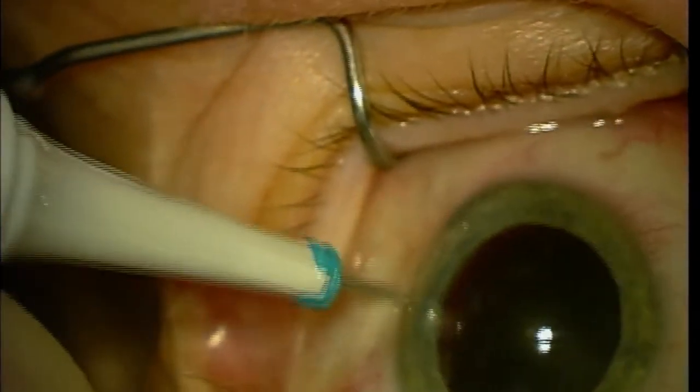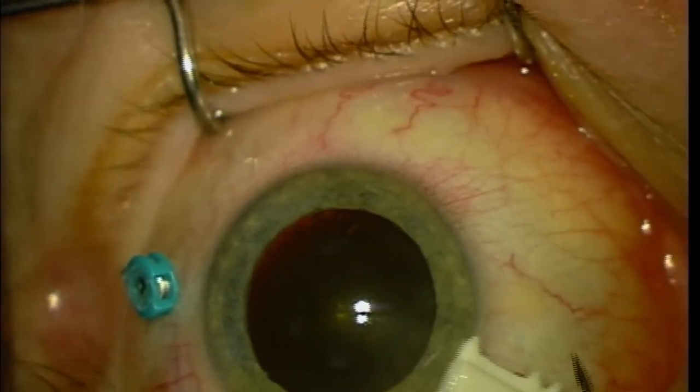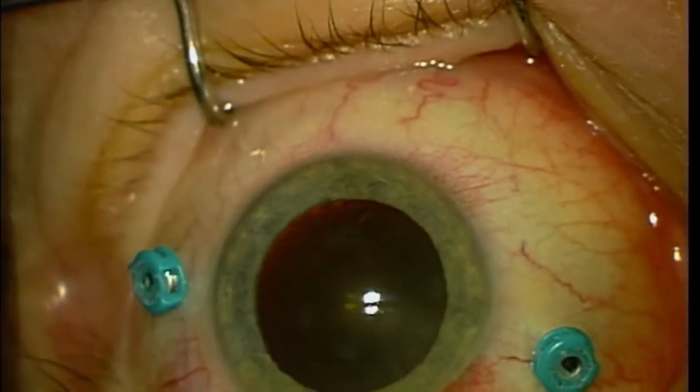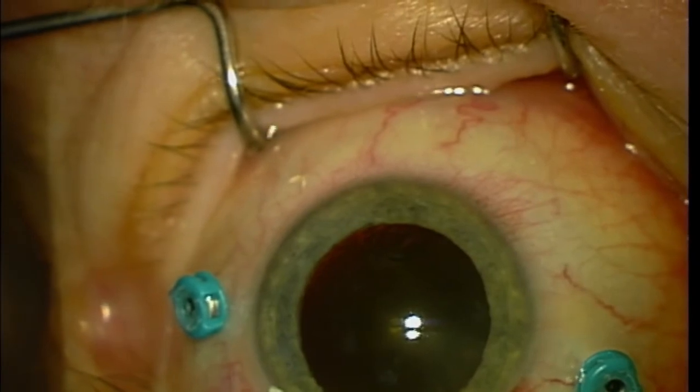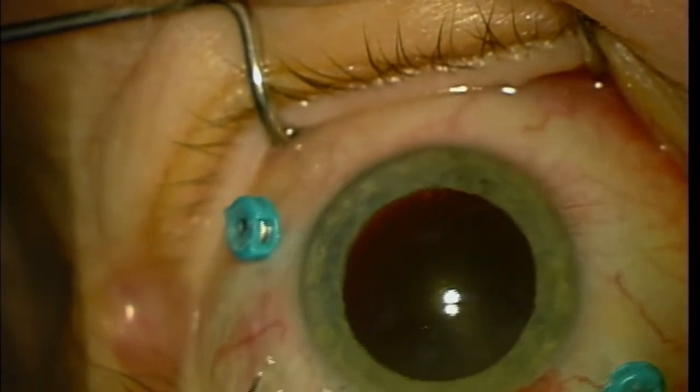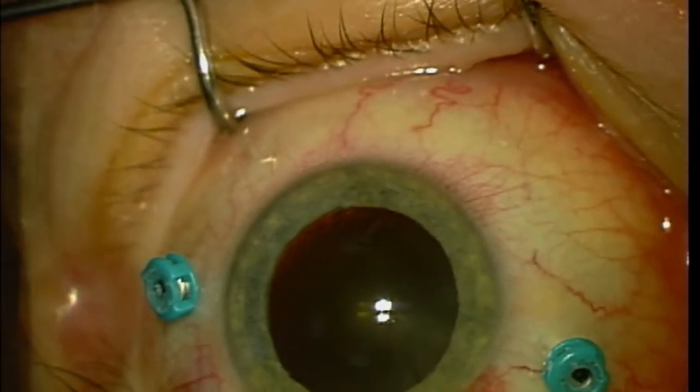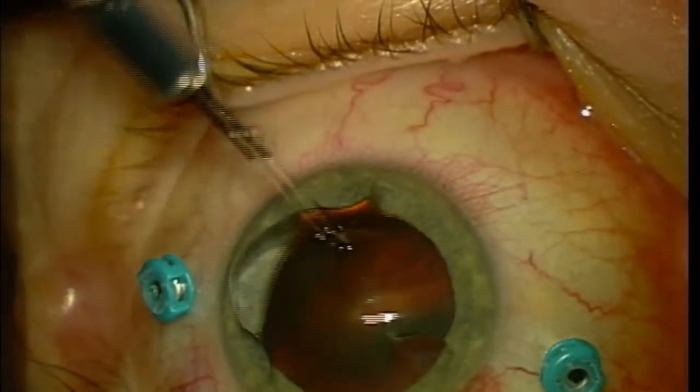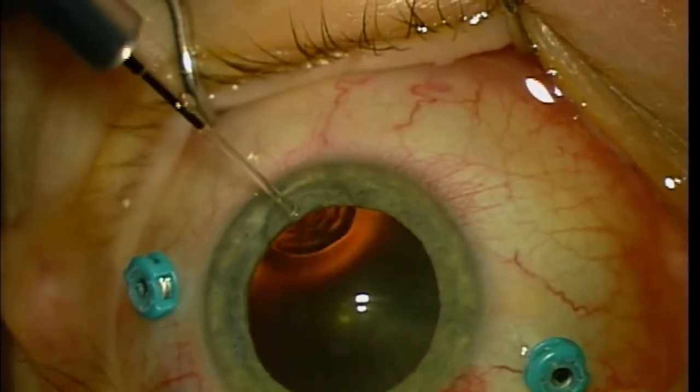So what I'm doing here is I'm installing a three-port vitrectomy system. Those blue devices are called trocars and they allow clean entry and exit of my instruments into the eye or through the walls of the eye. There are three of them. One is to support an infusion line to keep the eye inflated with balanced salt solution, which is exactly what you're seeing right there.